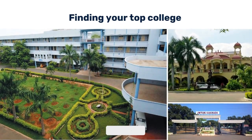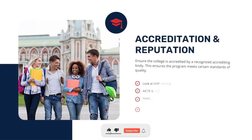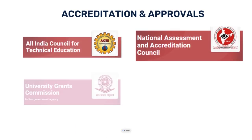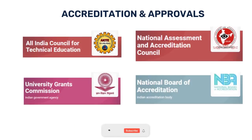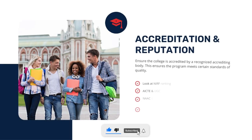First, if you choose a college, look at college accreditation and reputation. Check for AICTE approval, UGC approval, NAAC accreditation, and NBA accreditation. These ensure the college maintains good standards and quality education.